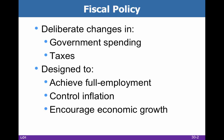Fiscal policy is one of the two toolboxes that the government has in order to influence the economy. The primary tools are government spending and taxes. Government spending can be broken up into traditional spending or transfer payments. This book considers transfers a type of government spending, though a lot of books break them out as a separate tool. Examples of transfers are things like social security, welfare payments, unemployment, and various other kinds of social safety net items. And taxes, obviously, can go up and down.